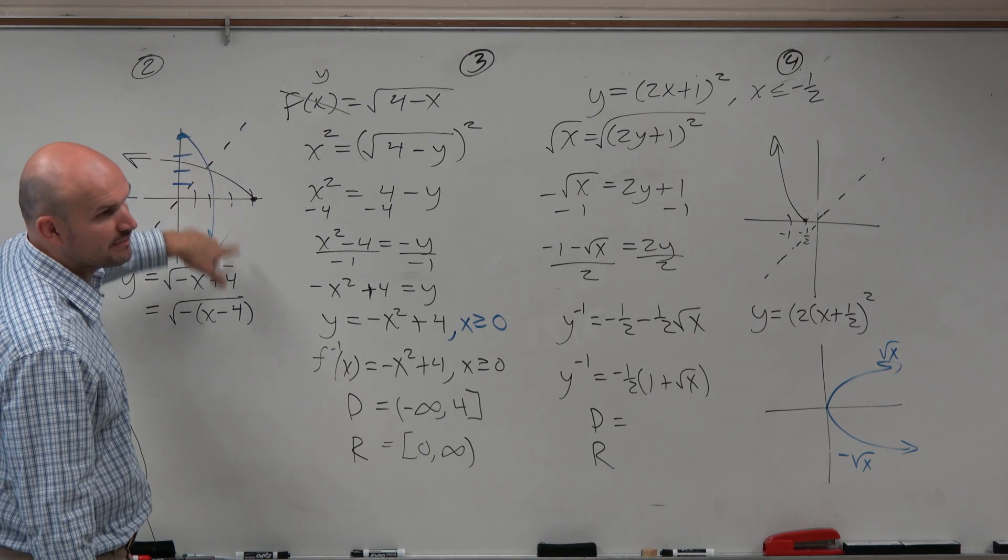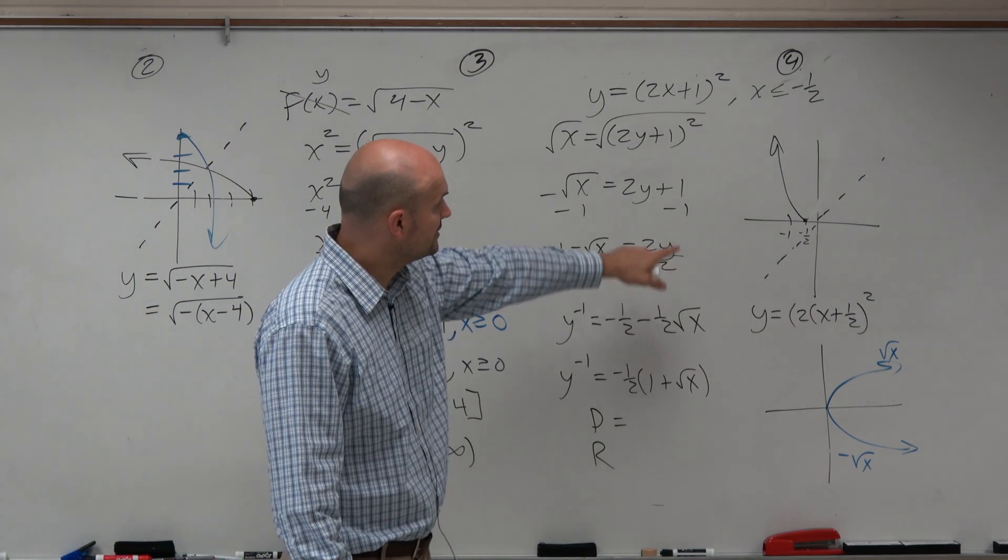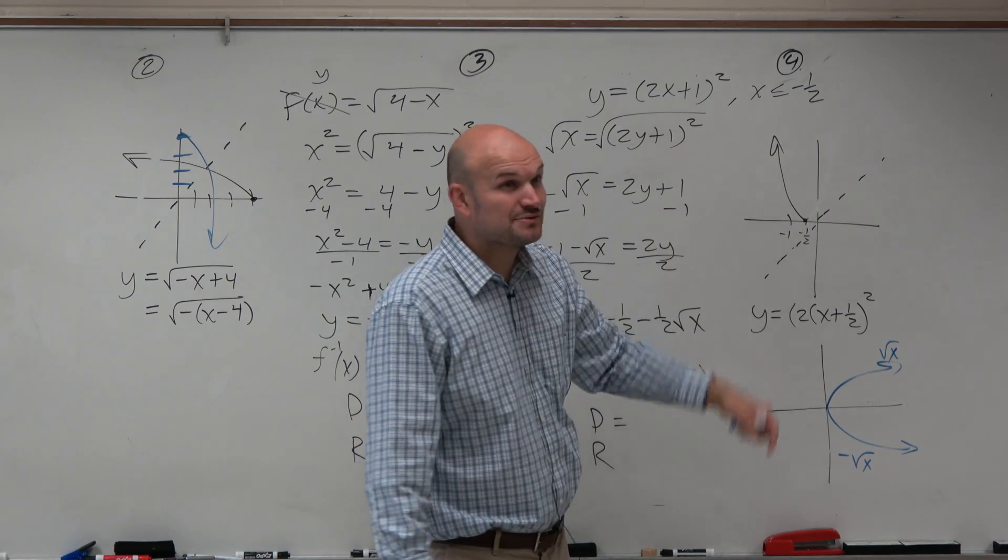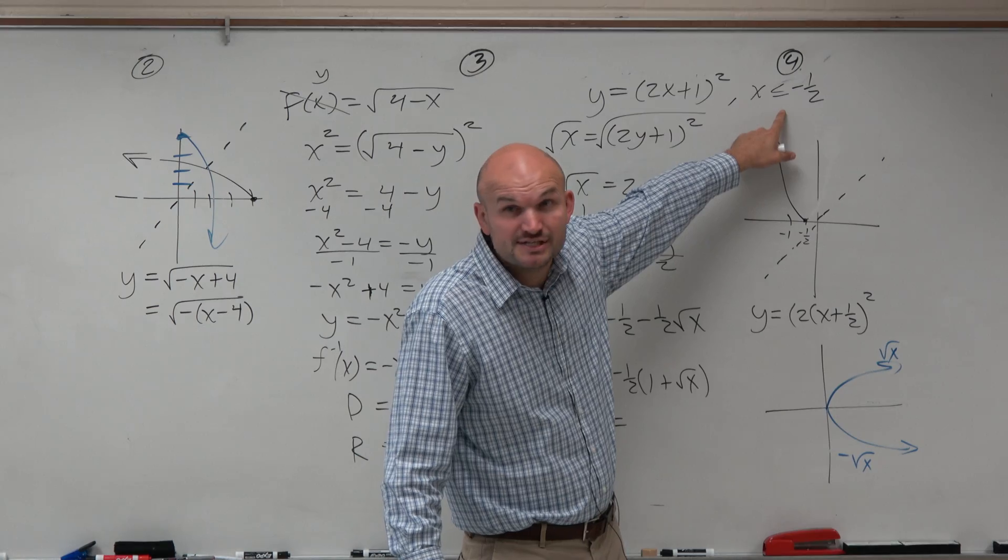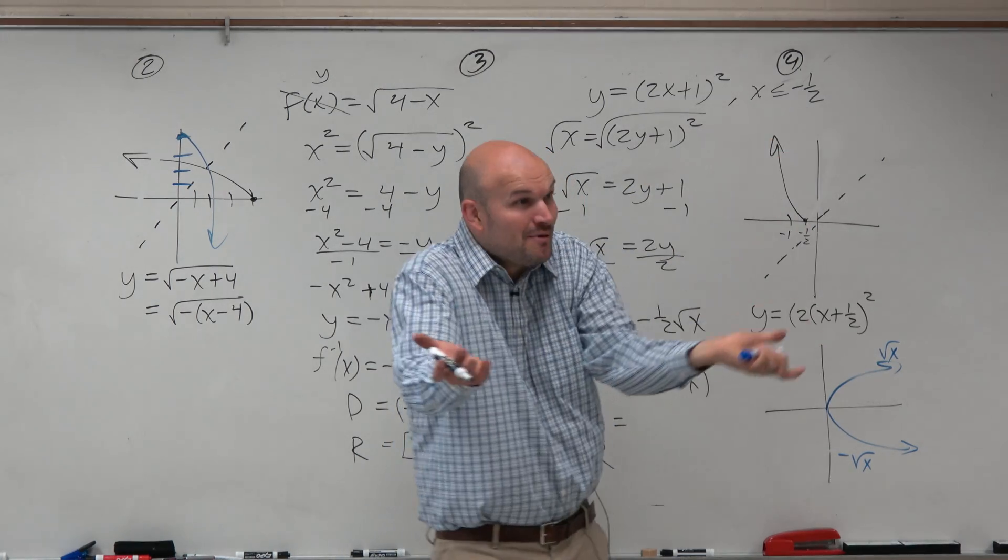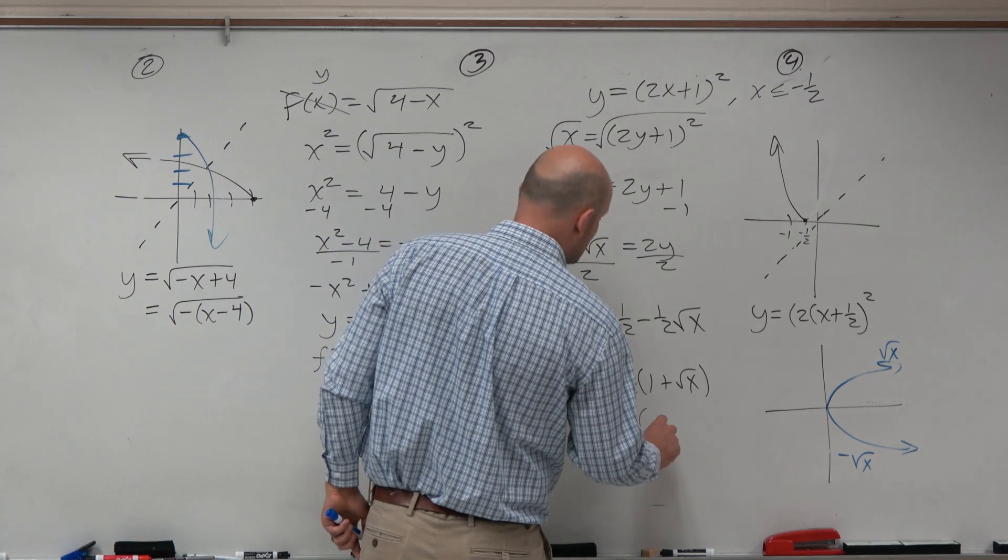And again, you can see that the domain of the blue graph is 0 to infinity, right? Over here, the domain is really easy. It's given to you. I can't even give you an easier problem, right? If you have a domain restriction, you know what that domain is for that portion. So please, let's not get this one wrong.